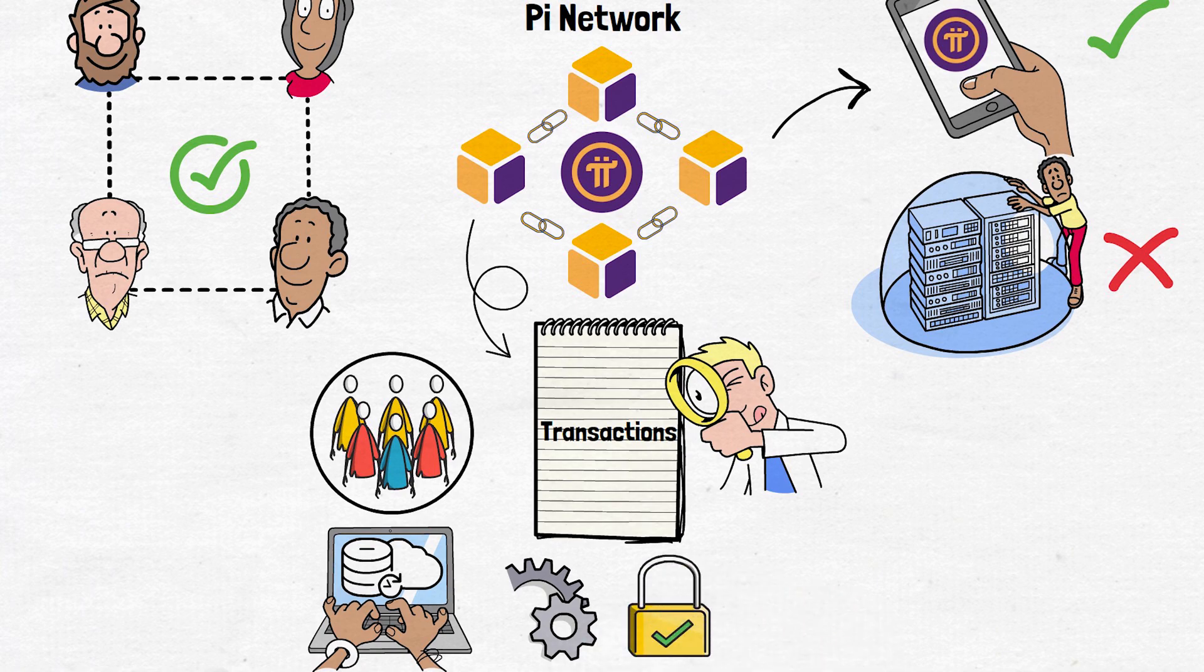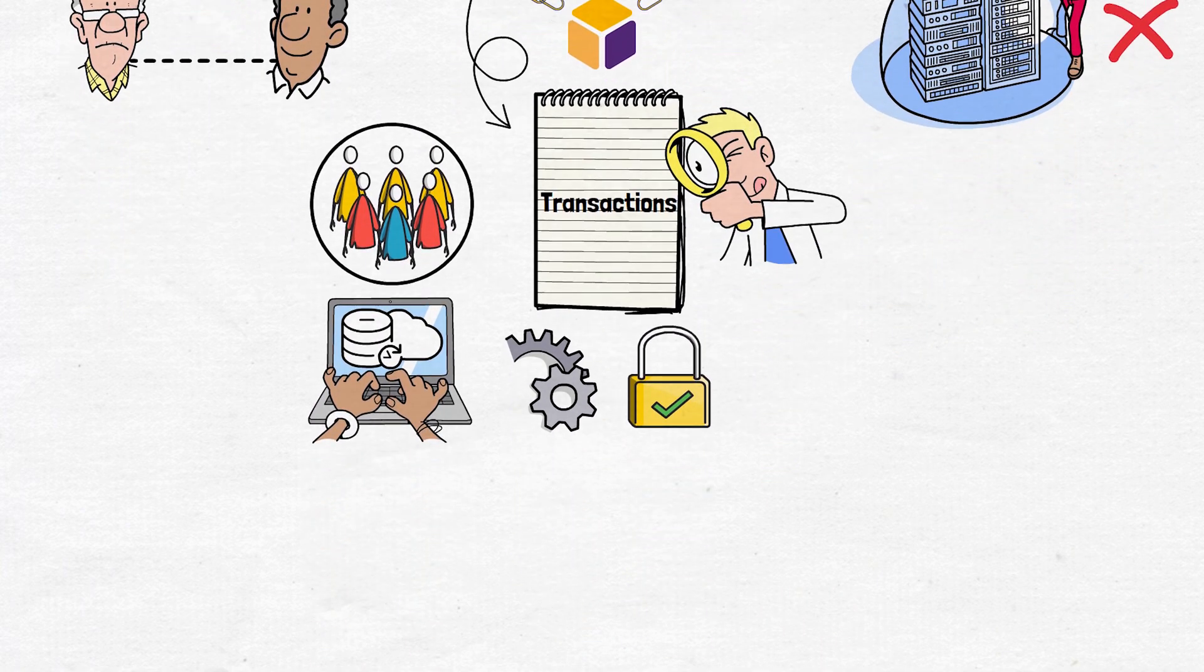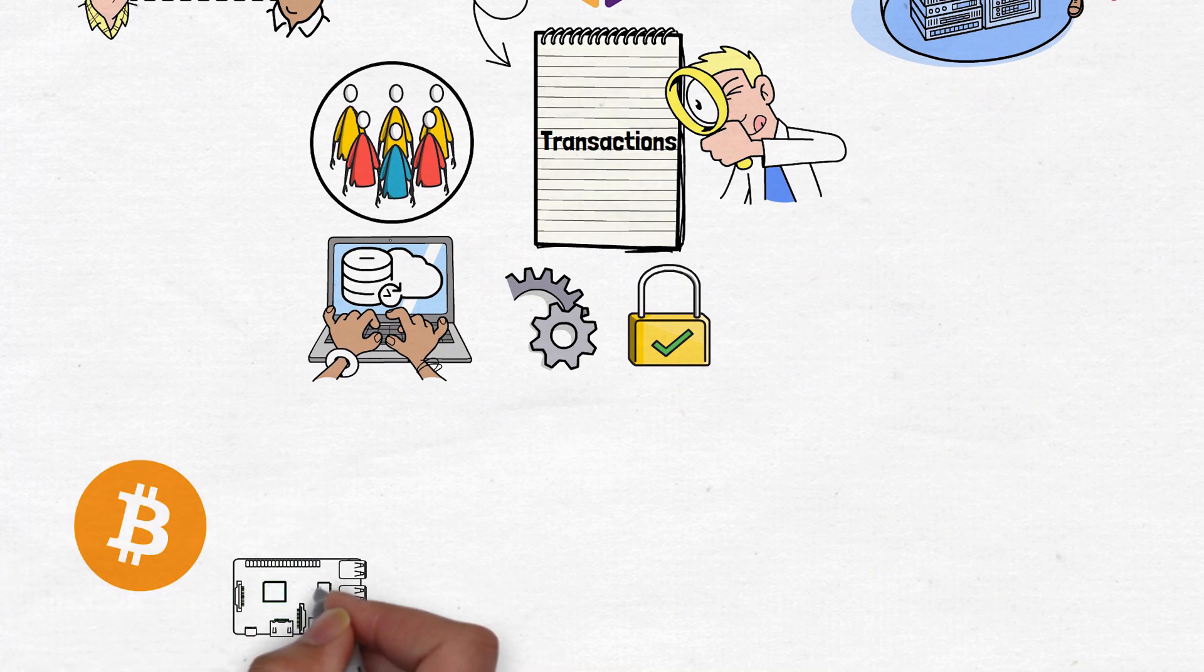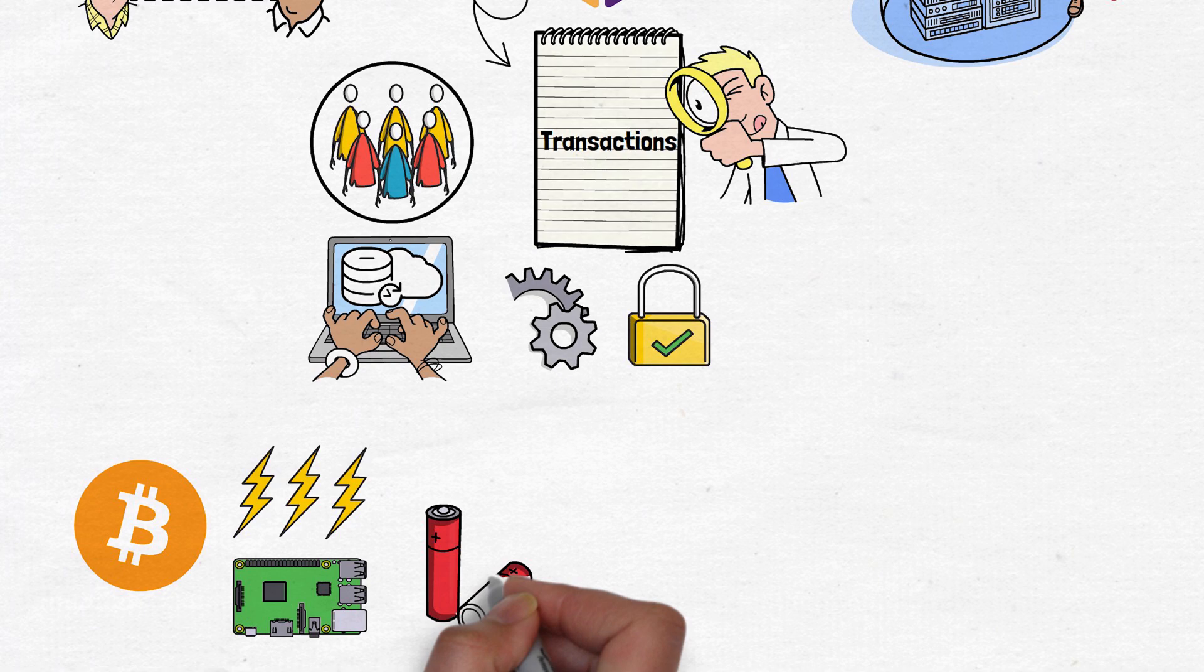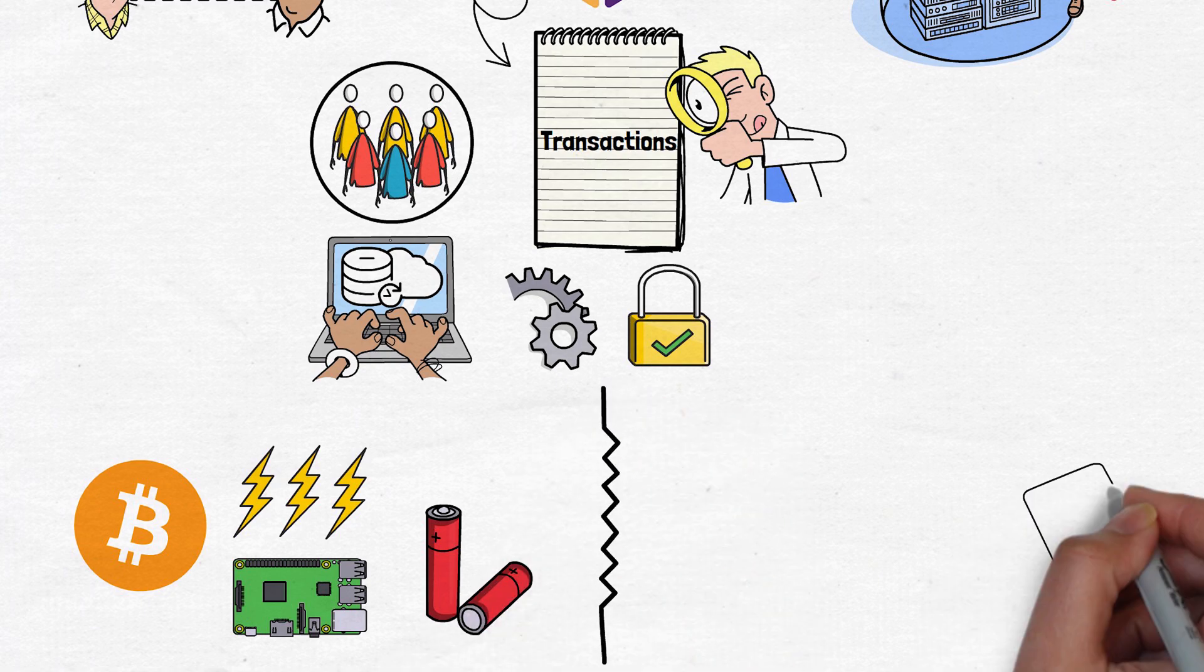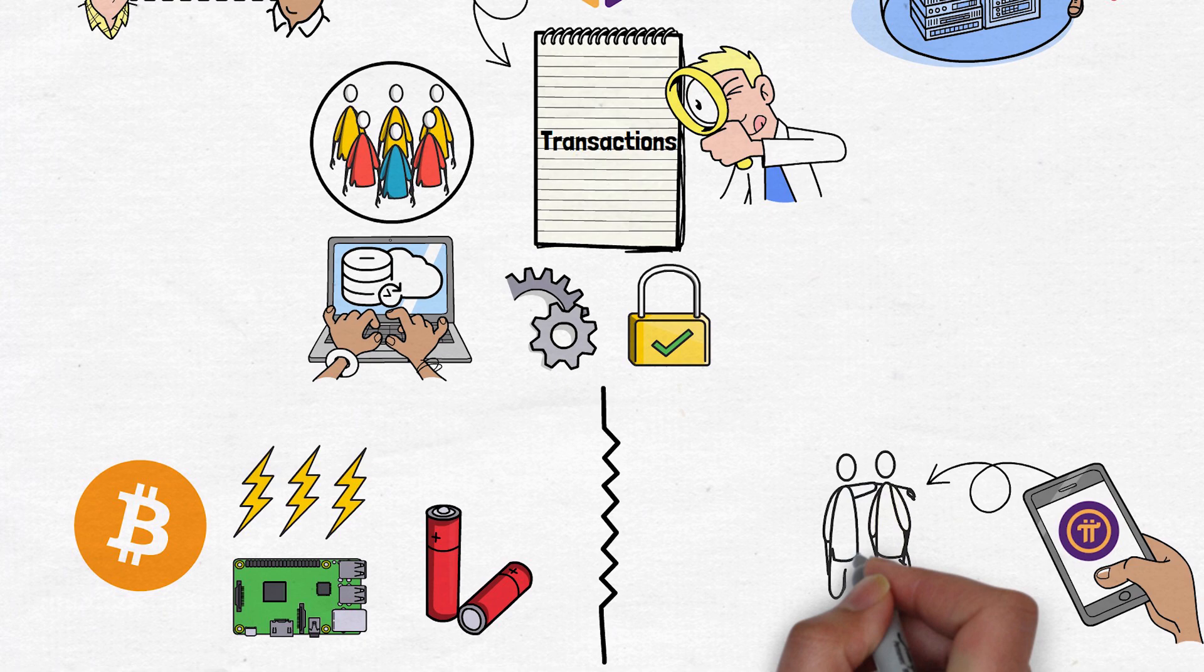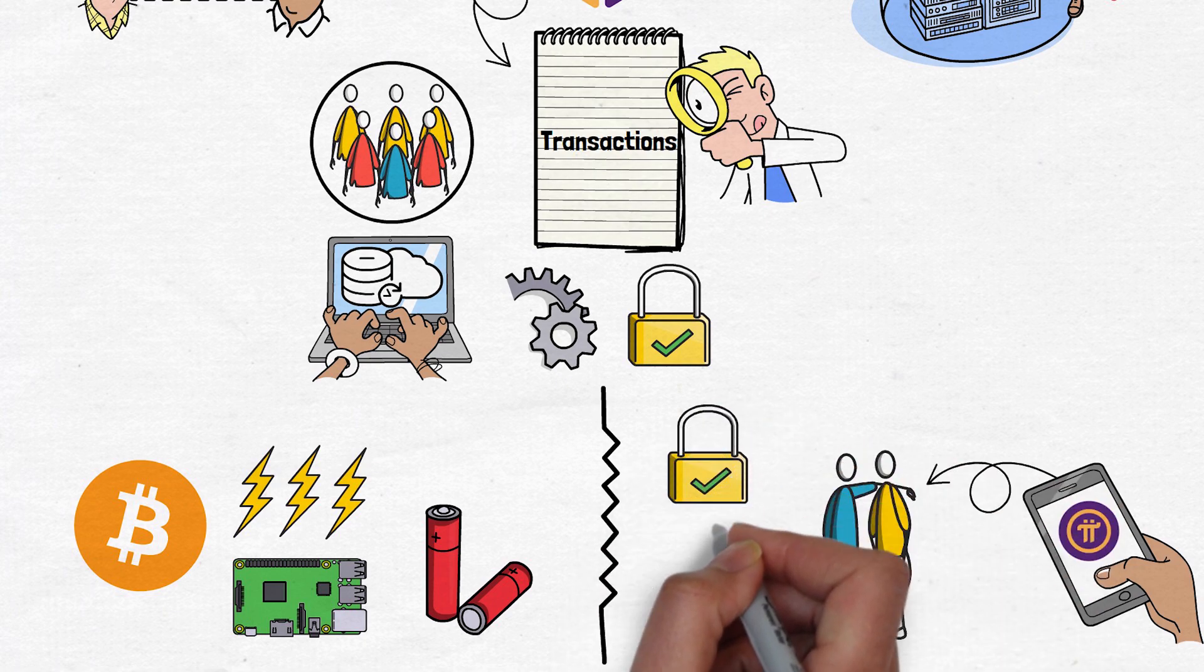Now, here's where things get interesting. Traditional blockchains like Bitcoin use massive amounts of computing power to validate transactions. This consumes immense energy. Instead, Pi relies on a trust-based model using the connections you form within the app. The result is a secure, low-energy system capable of handling millions of users.